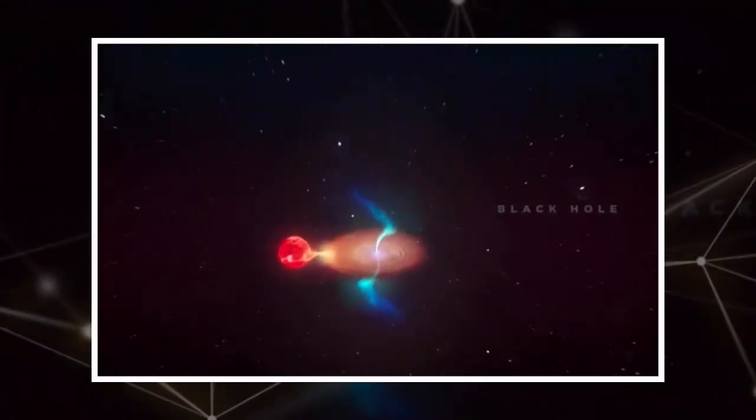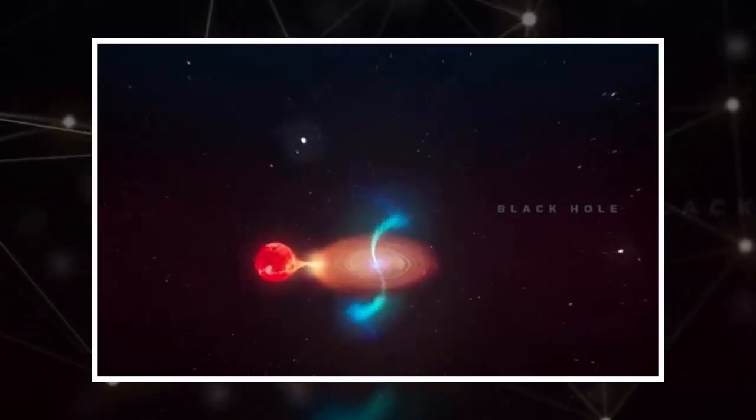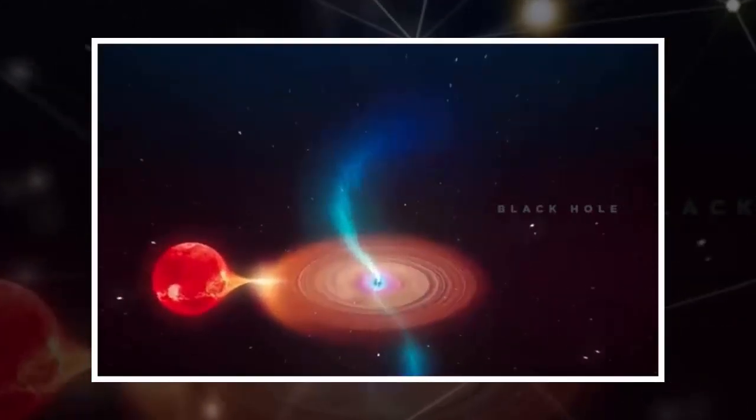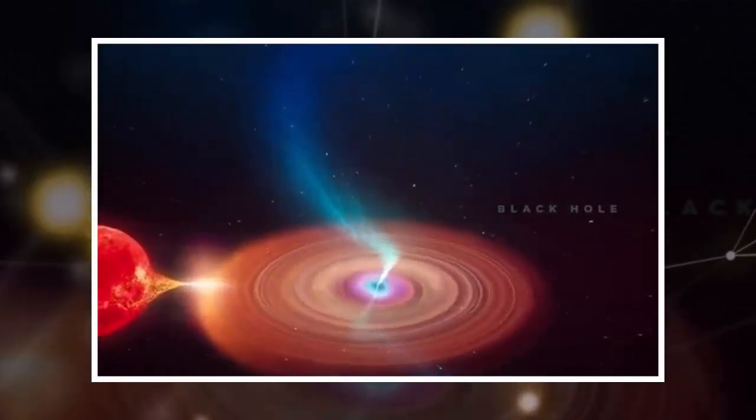Like many black holes, it's feeding on a nearby star, pulling gas away from the star and forming a disk of material that encircles the black hole and spirals towards it under gravity.